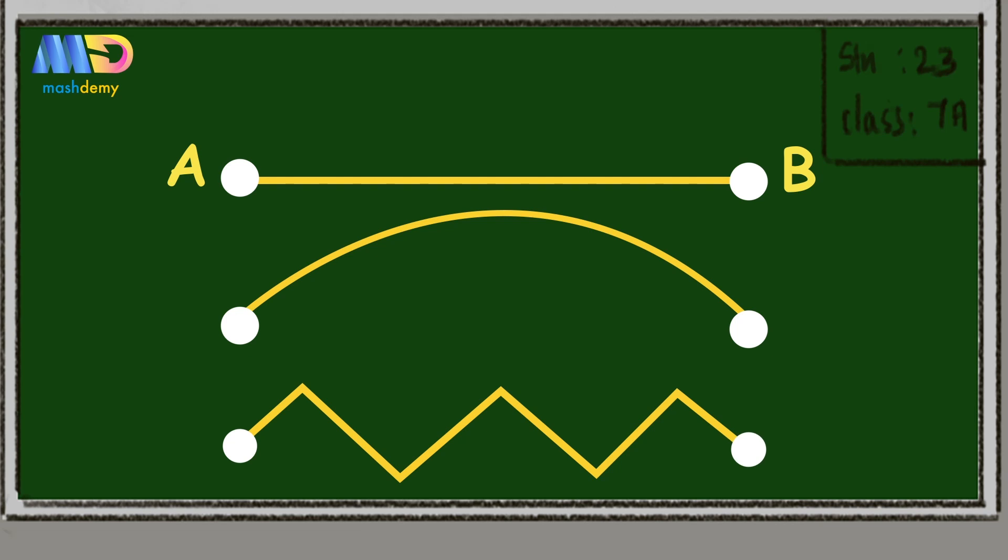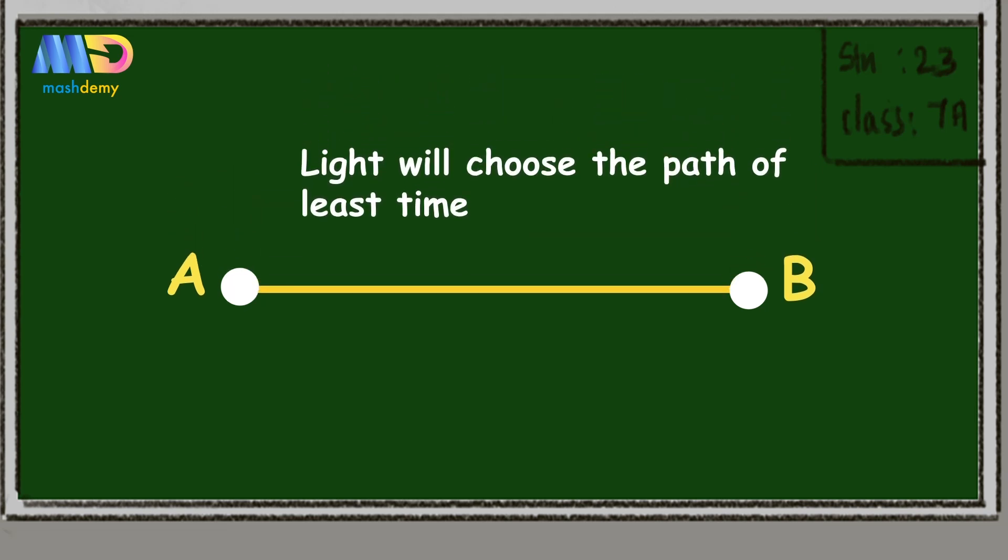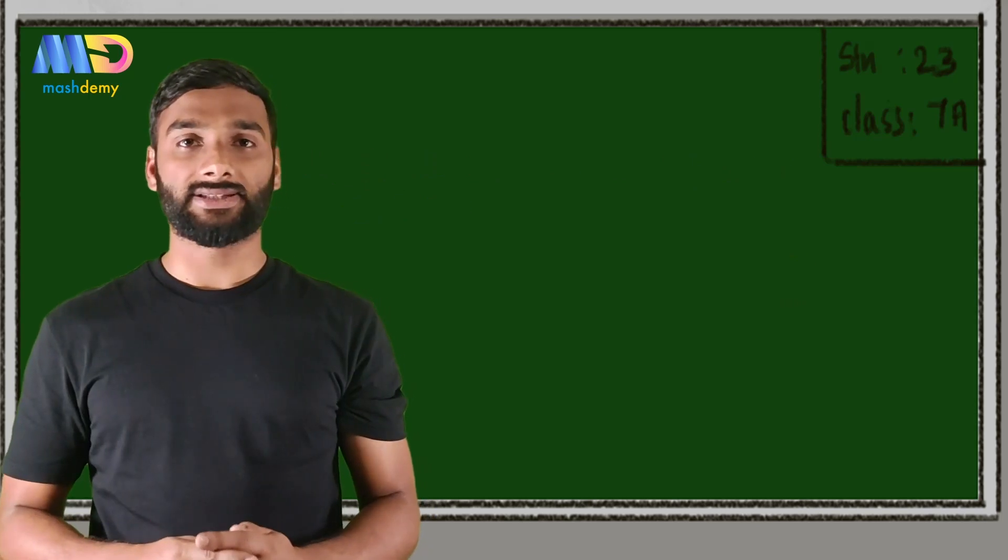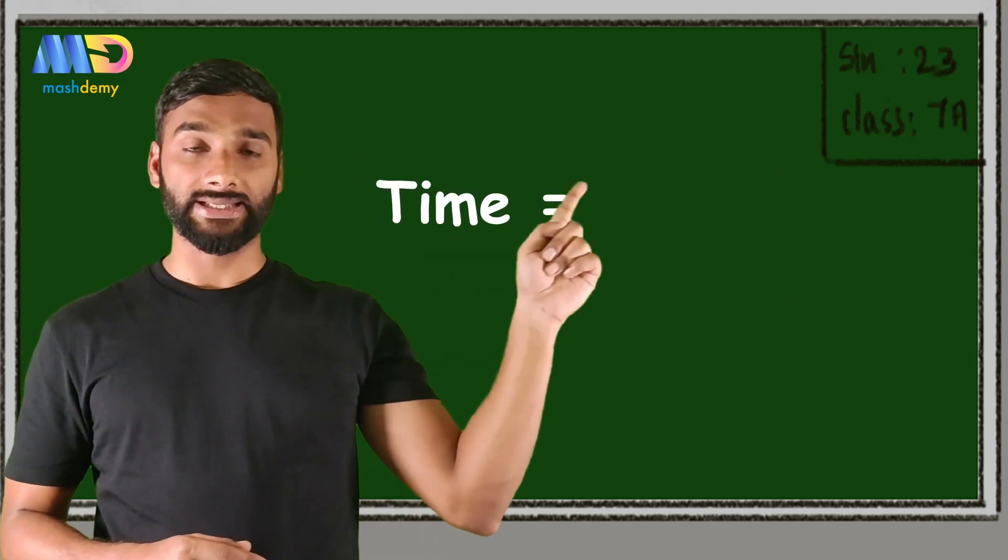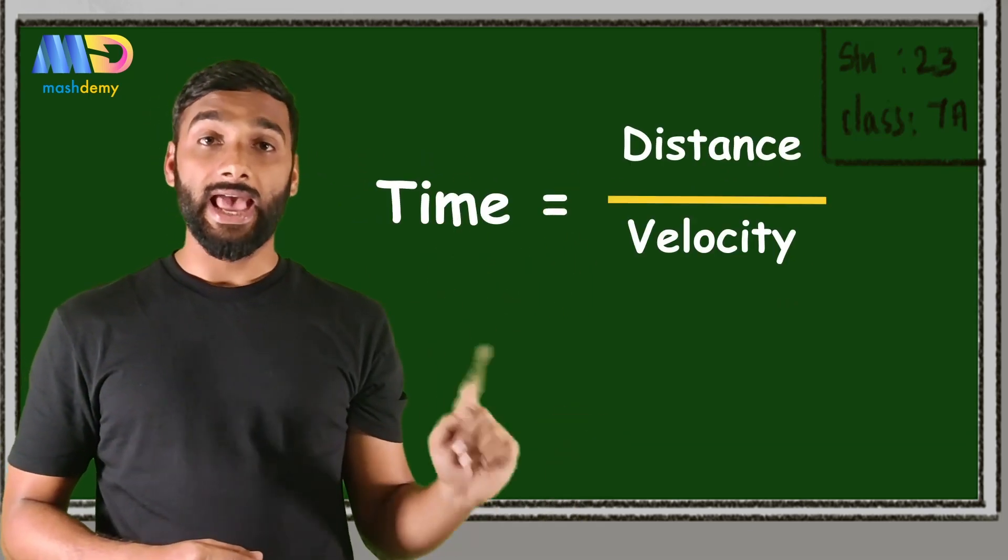But according to the principle of least time, light will choose the path of least time. Now, for minimizing time, time depends on distance over velocity.